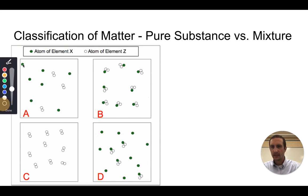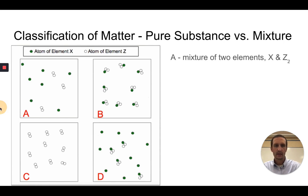Let's look at A first. When I look at A, I see atoms of X, and then I see two atoms of element Z. When I classify this, I would look at this and say, well, that is a mixture of two elements, X and Z2.